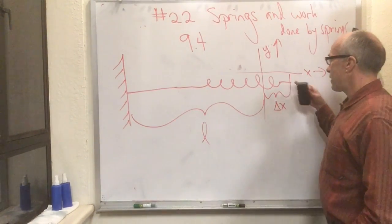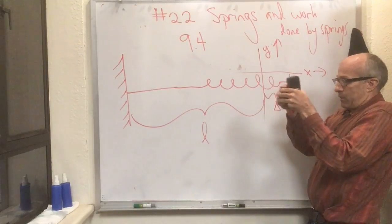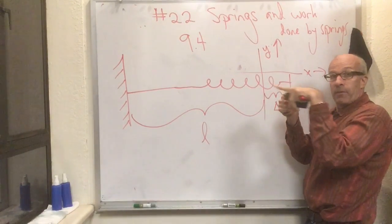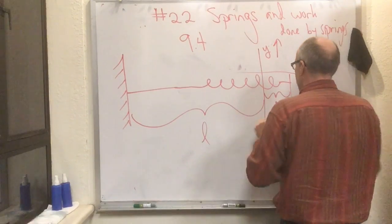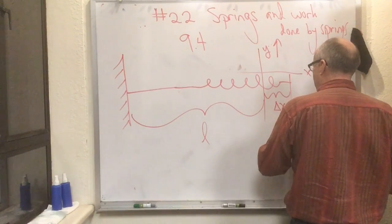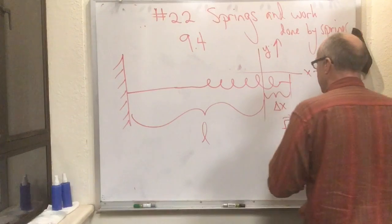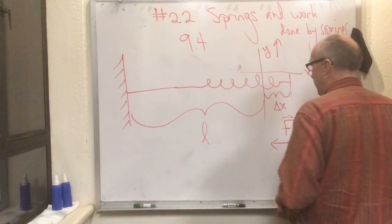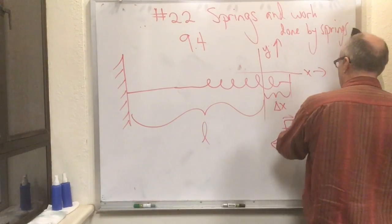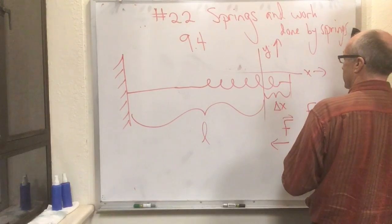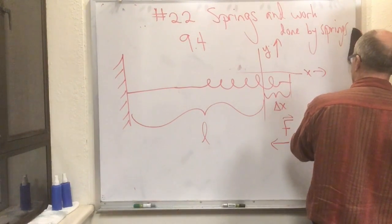This time, in order to do this you have to pull on the spring in this direction. It's pulling back on you, so the force that the spring is creating is pointing to the left. If you ask what its component in the x direction was, you would say that Fx is less than zero.